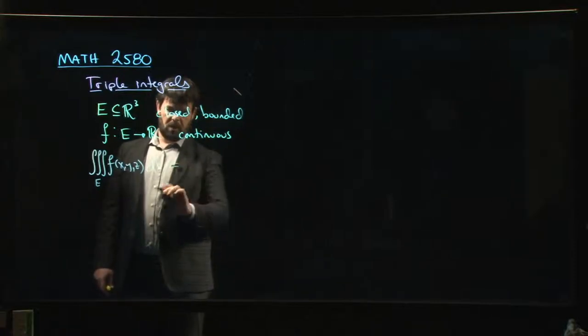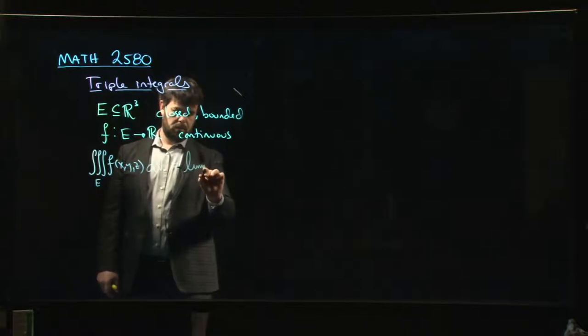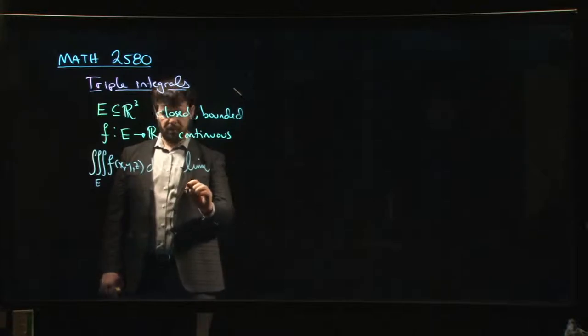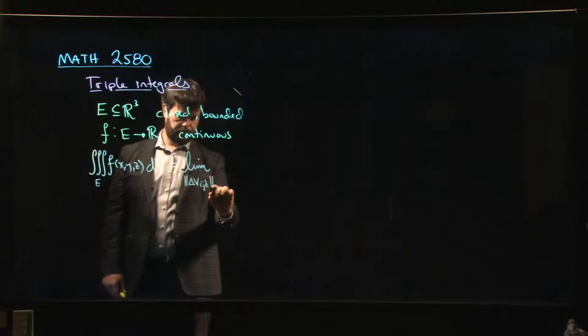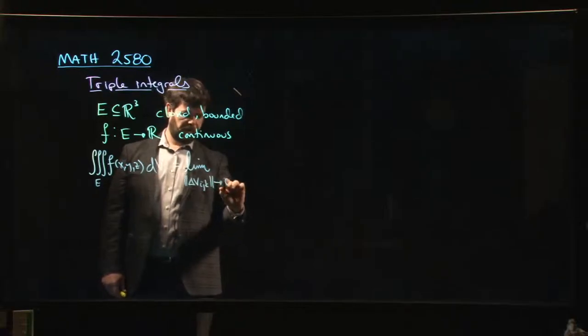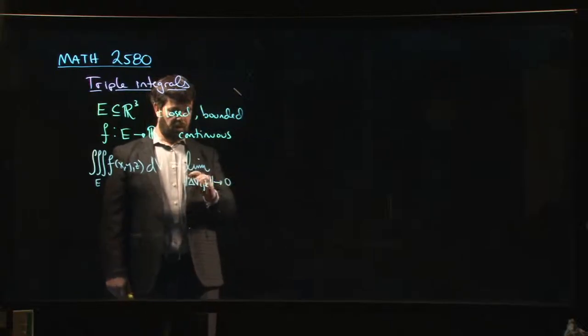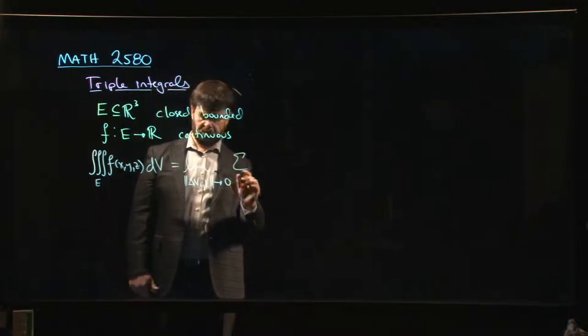And if we really wanted to kind of get into the details, and I'm skipping some of them, we might say something like, well, this is going to be defined as a limit. And it's going to be defined as a limit where I got to tell you what these ΔV_ijk are. The limit as the size of those goes to zero, or kind of the max. So the double bars here, meaning the kind of the biggest of all the delta Vs.